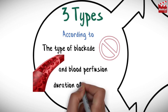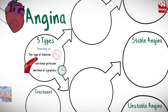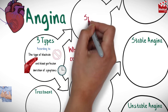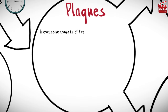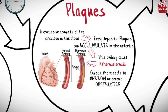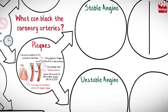Angina is classified into three types according to the type of blockade, blood perfusion, and duration of symptoms: stable, unstable, and variant angina. Coronary arteries may be blocked by plaques or spasm. If excessive amounts of fat circulate in the blood, fatty deposits called plaques can accumulate in the arteries — a buildup called atherosclerosis — causing the vessels to narrow or become obstructed, starving heart tissues of oxygen.